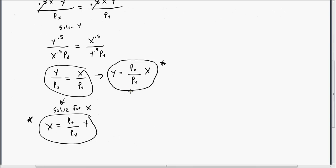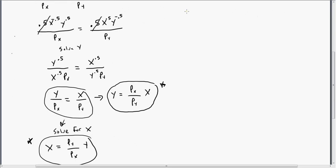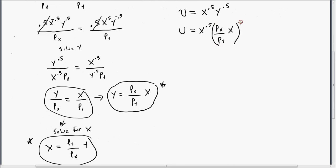What we're going to do with each of these equations is substitute them into the utility function. Recall that utility in this problem is given by x to the 0.5 times y to the 0.5. So where we see y, we substitute in the expression for y: we plug in the price of good x divided by the price of good y, times x — all raised to the power of one-half.